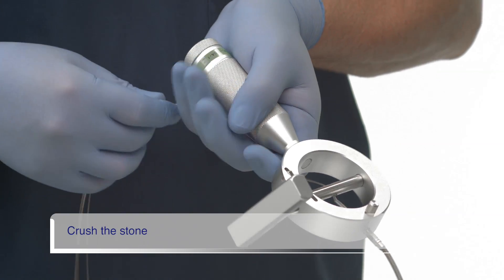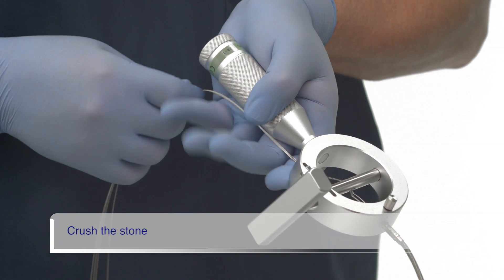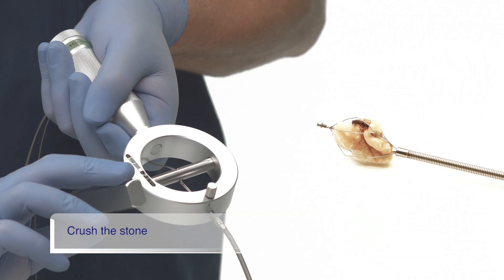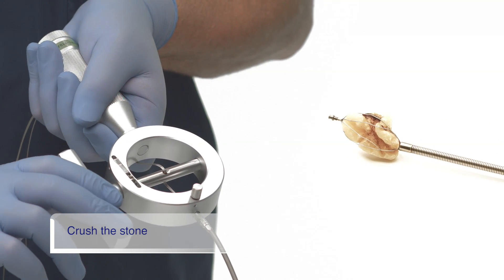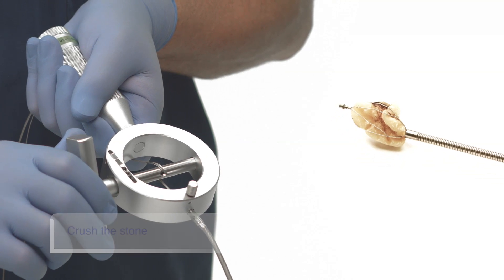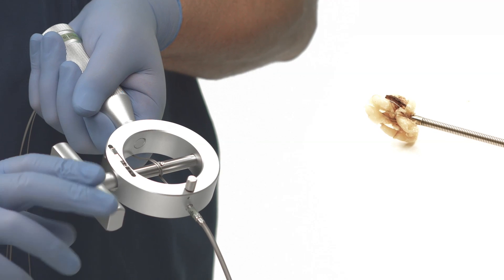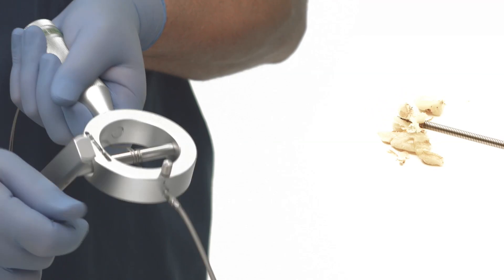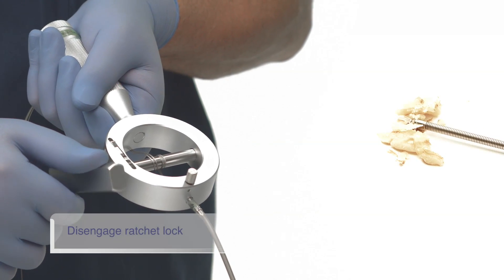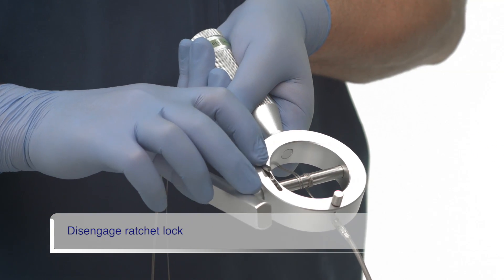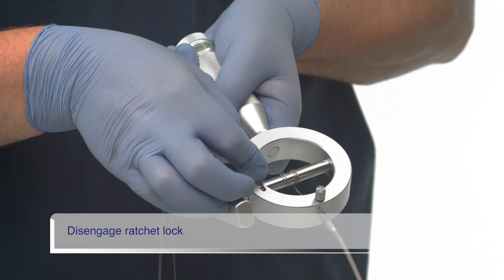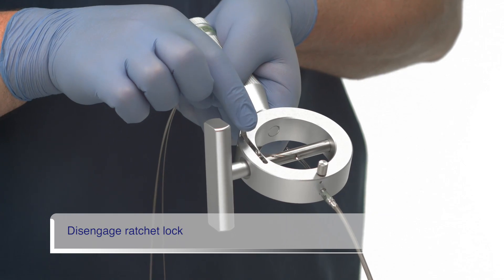While holding the wires against the handle with your left hand, slowly turn the rotatable bar with your right hand to crush the stone. Once the stone is crushed or the basket is broken, ensure that you relieve the tension in the coil sheath by disengaging the ratchet prior to removing from the patient.